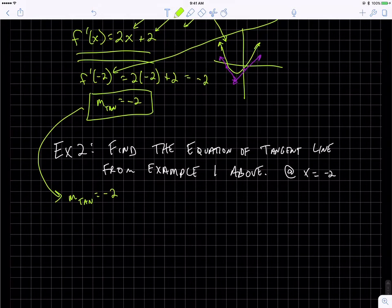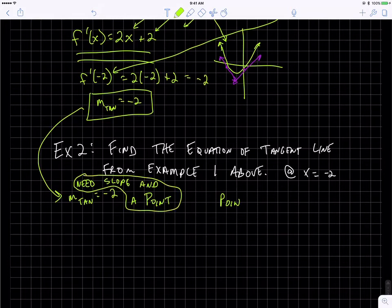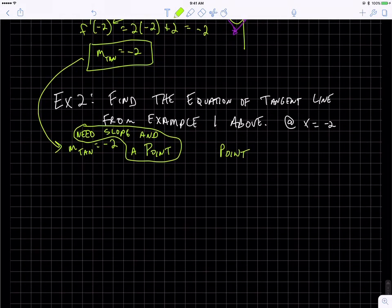What else do I need to write the equation of a line? If you think back to algebra 1, I need a point. We're going to use point-slope form. We need slope and a point. Forget slope-intercept form for now.